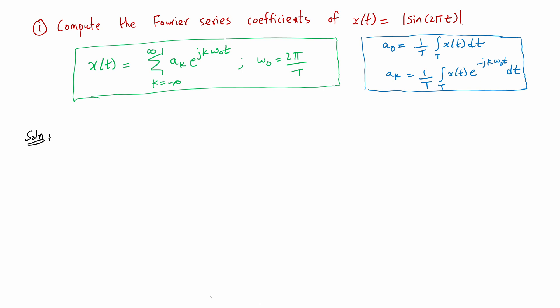Hi, and welcome to this video on computing the Fourier series coefficients of the signal |sin(2πt)|. In the first class of this week, we looked at how to compute the Fourier series coefficients of a periodic square wave. In particular, when the duty cycle was 50% — the square wave was on for half the time period and off for the remaining half — we noticed that only the odd harmonics survived and the even harmonics were all zero.